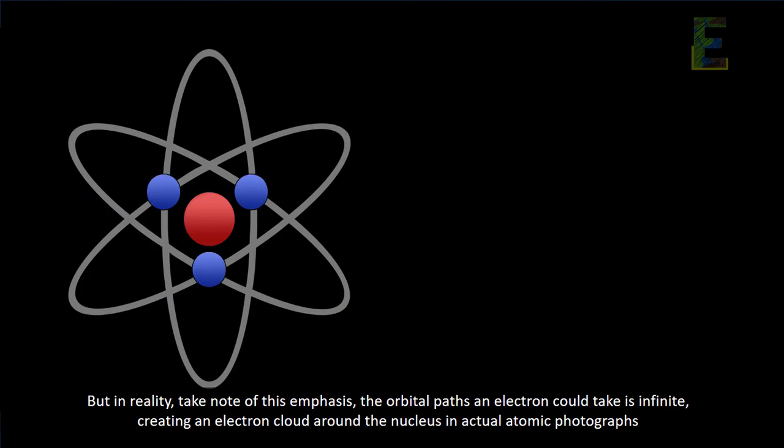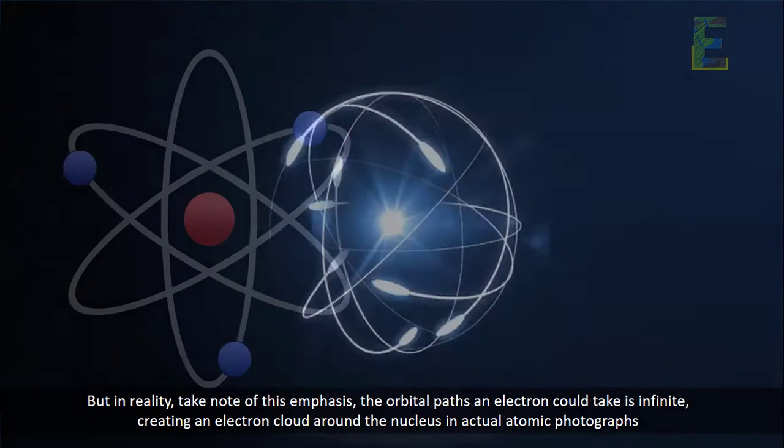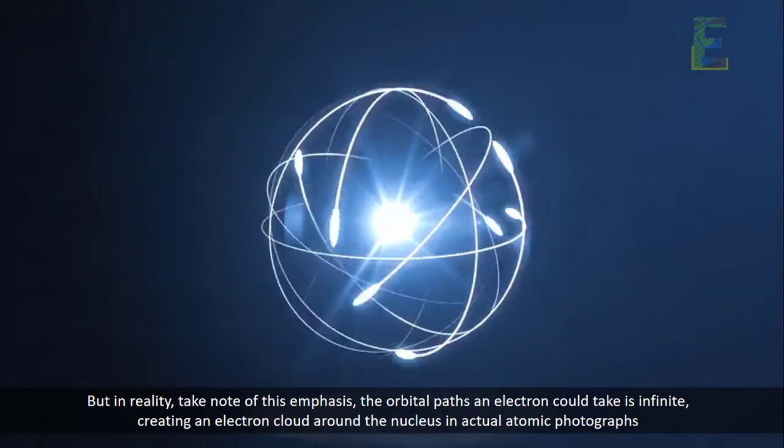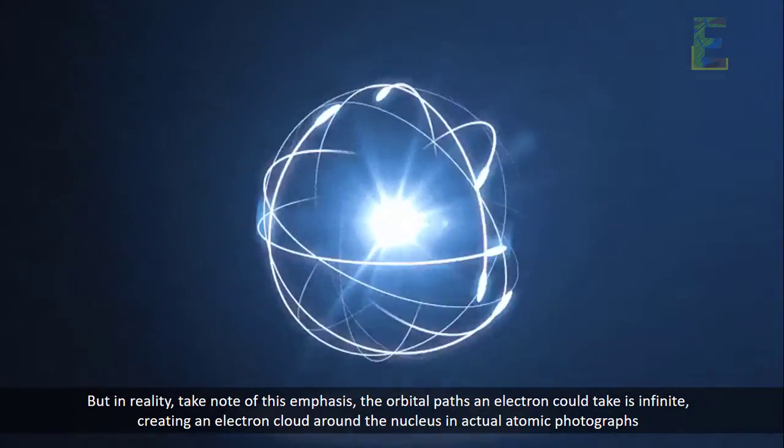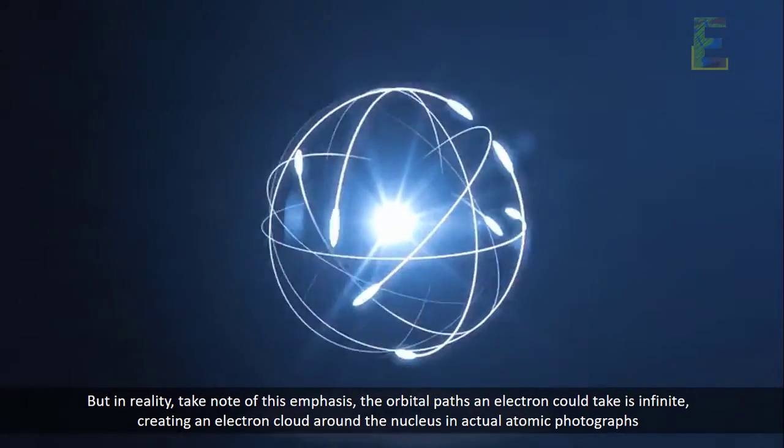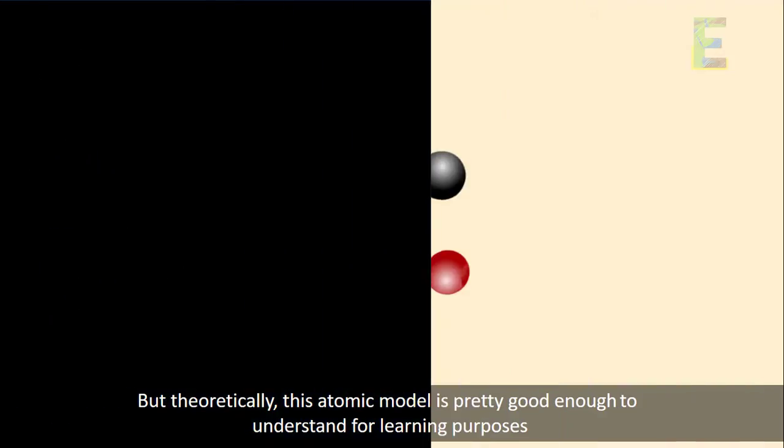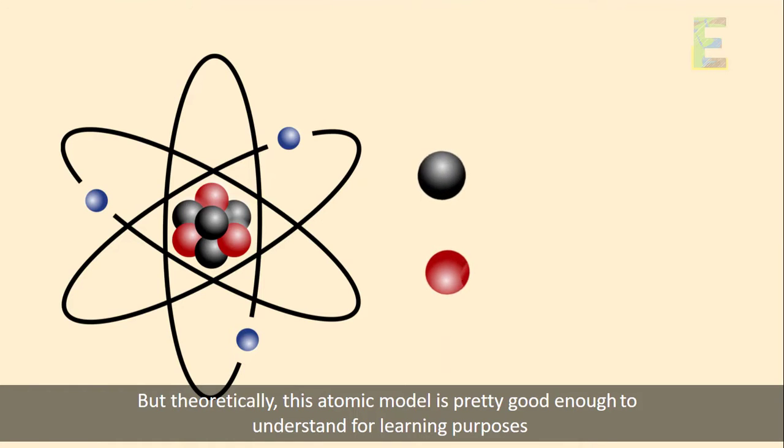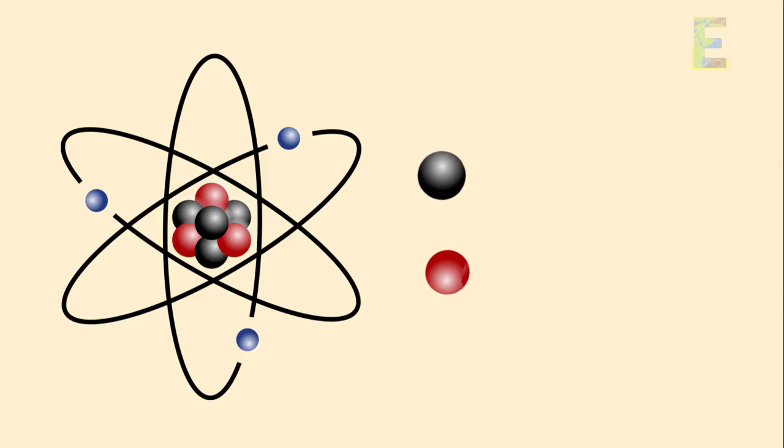But in reality, take note of this emphasis. The orbital paths an electron could take is infinite, creating an electron cloud around the nucleus in actual atomic photographs. But theoretically, this atom model is pretty good enough to understand for learning purposes.